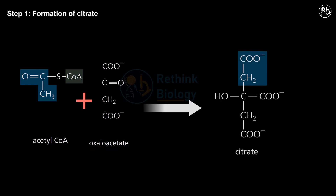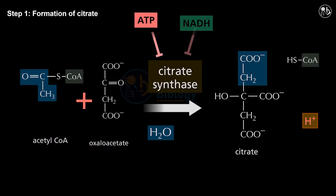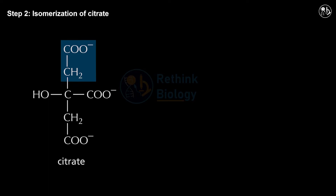The citric acid cycle is an eight-step process. Step 1: Formation of citrate. In this step, acetyl-CoA combines with oxaloacetate to form citrate. This reaction is catalyzed by the enzyme citrate synthase and releases coenzyme A. Citrate synthase is inhibited by high levels of ATP or NADH, which indicate that there is enough energy available for the cell.